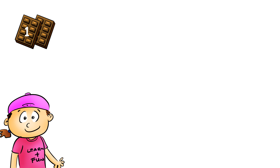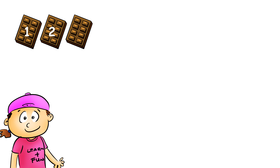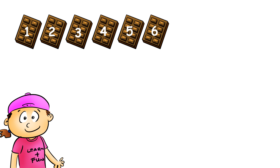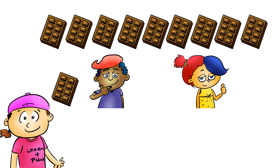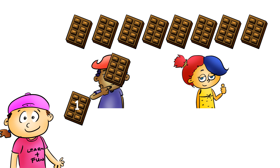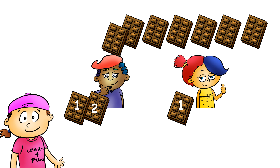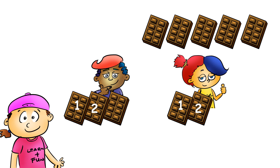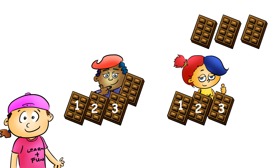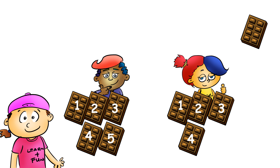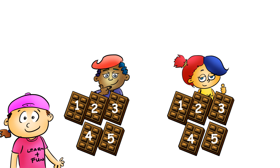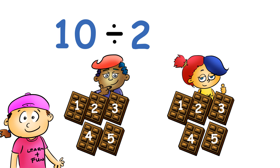So you got one, two, three, four, five, six, seven, eight, nine, ten chocolate bars. So one for you, one for your friend, another one for you, another one for your friend, another one for you, another one for your friend, another one for you, another one for your friend.